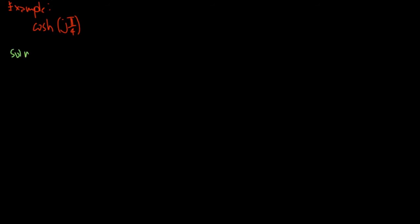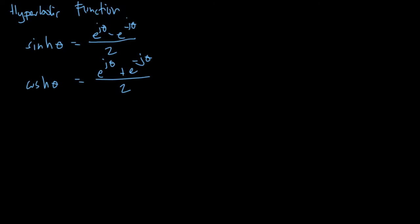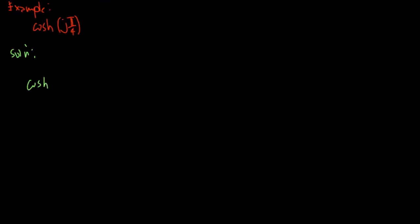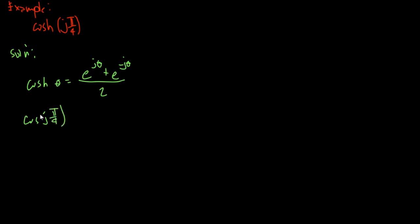So, solution. Using our formula, we could go to the previous side — using this one. We could say that cosine theta equals E to the j·theta plus E to the negative j·theta over 2. So we substitute here: hyperbolic cosine of j·π/4 is equal to E to the j·π/4 plus E to the negative j·π/4, all over 2.